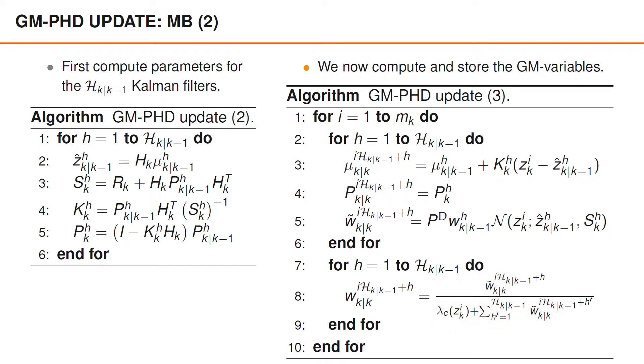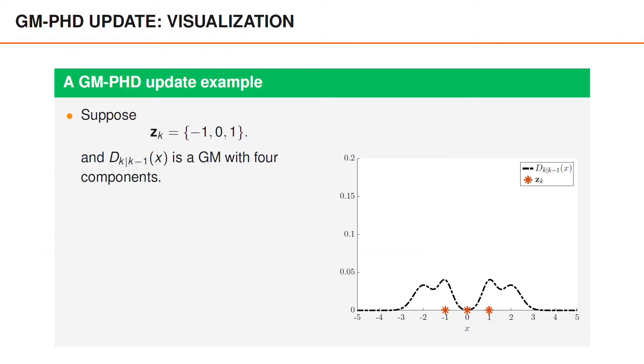We note that this part ensures that the sum over the weights for a single Bernoulli component can never be larger than 1, which makes sense since the expected number of objects from a Bernoulli random finite set is at most 1. As for the last part of this algorithm, the denominator does not actually depend on h and can be pre-computed before starting the for loop.